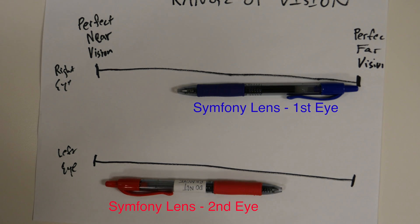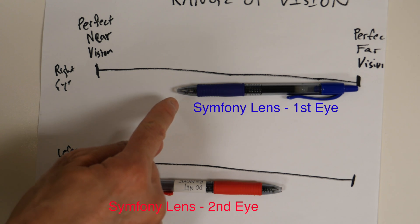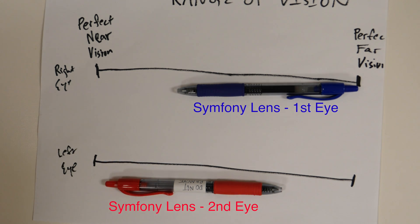Or another way I express it is we can give your right eye A quality far vision and about B quality near vision. We can give your left eye B quality far vision and A quality near vision. In the combination of the two,